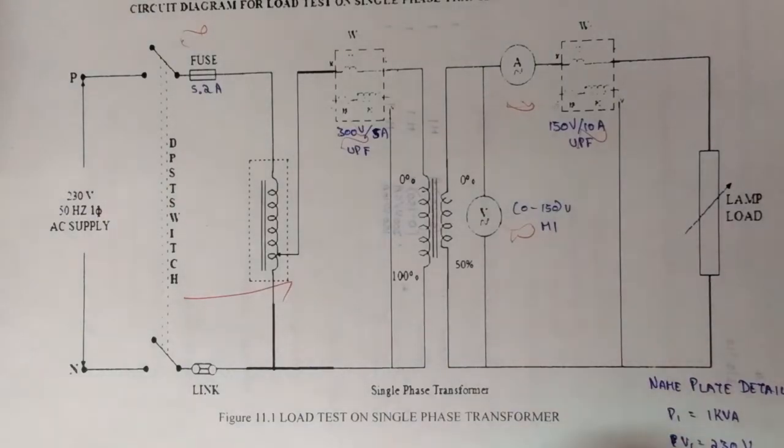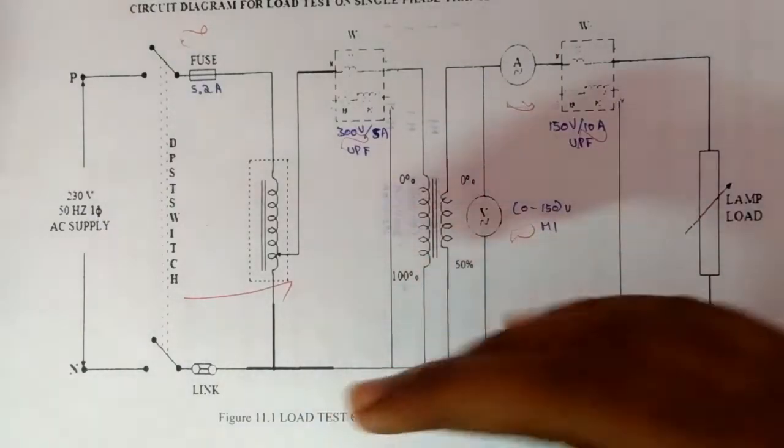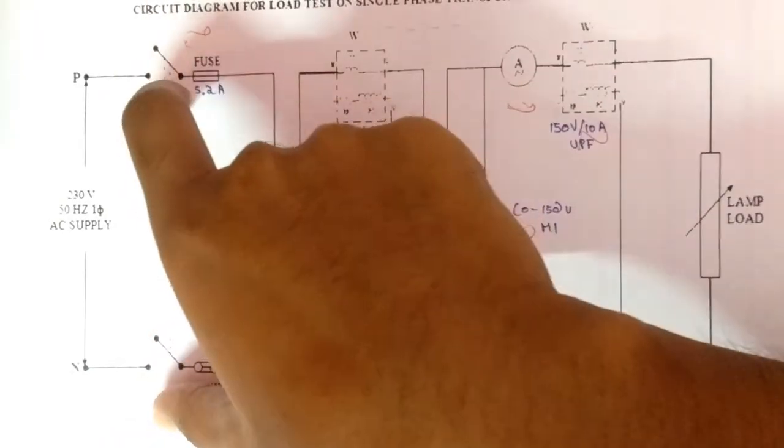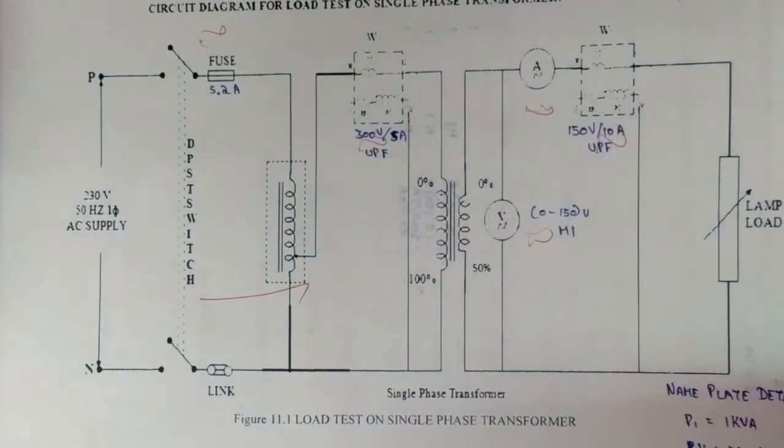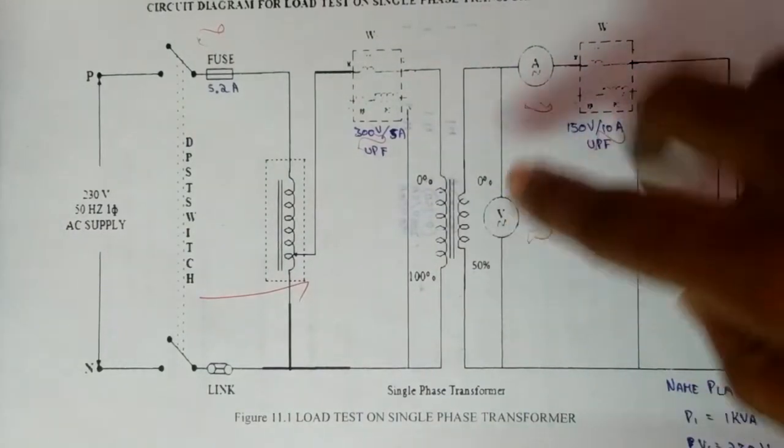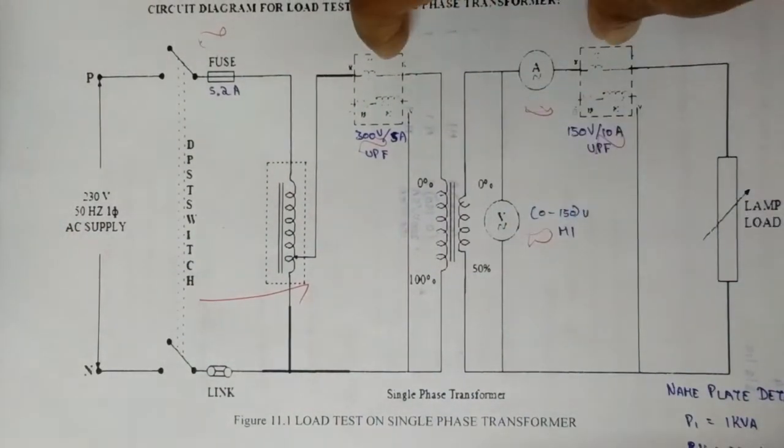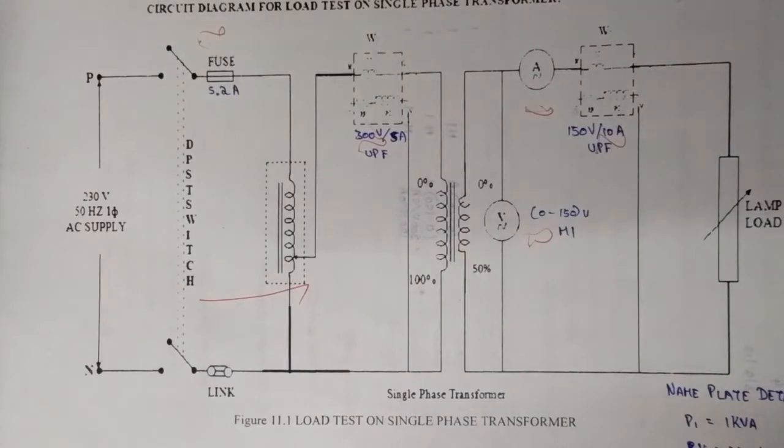The procedure is simple. First, the DPST switch is closed and the supply is given to the circuit. Then the no-load readings of voltmeter, ammeter, and wattmeter are noted down.